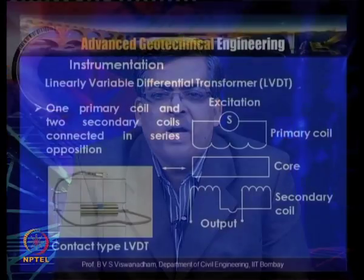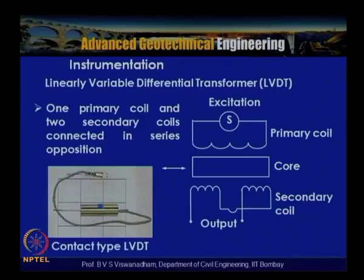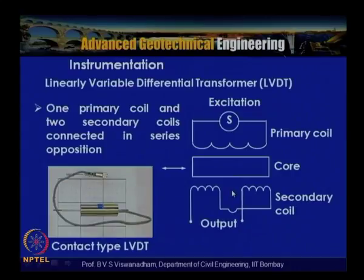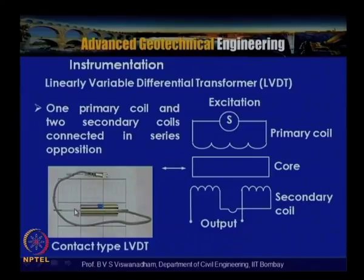An LVDT (linearly variable differential transformer) has a core, one primary coil, and two secondary coils connected in series opposition. Whenever the core moves, this registers as a change in voltage that is measured as output. A typical LVDT has a casing and a core; small pads are attached to the tip to reduce stresses so the core does not pierce into the soil.